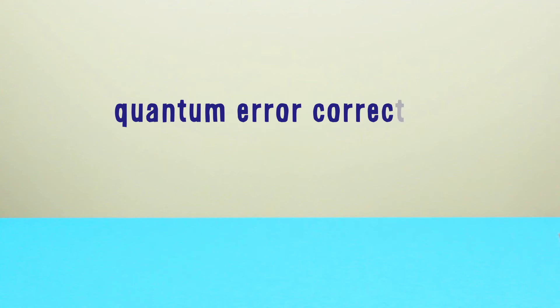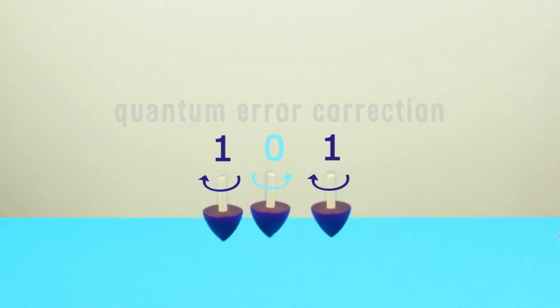Quantum error correction. We take three quantum particles and distribute our zero or one across these three quantum particles. Now, if one of these particles goes out of sync with the others, we can use a special trick.